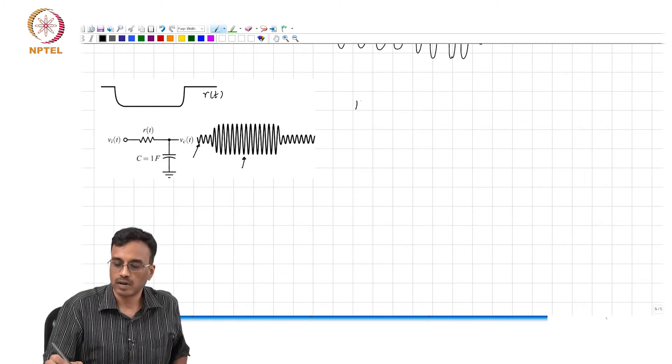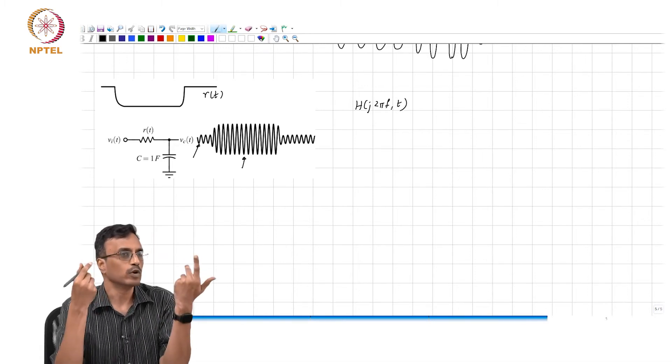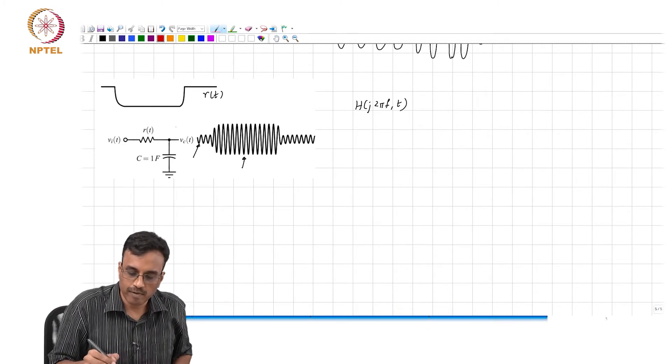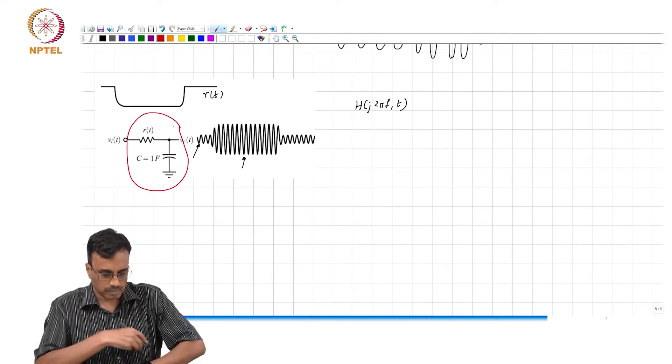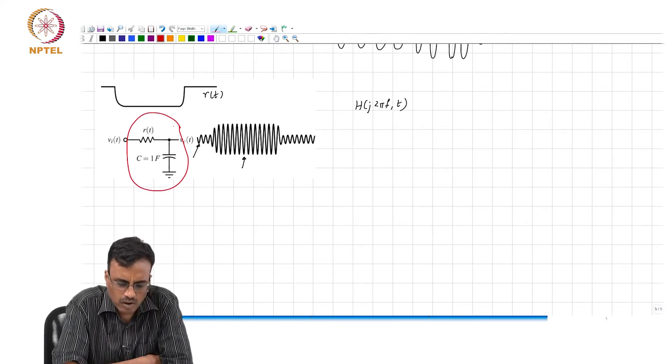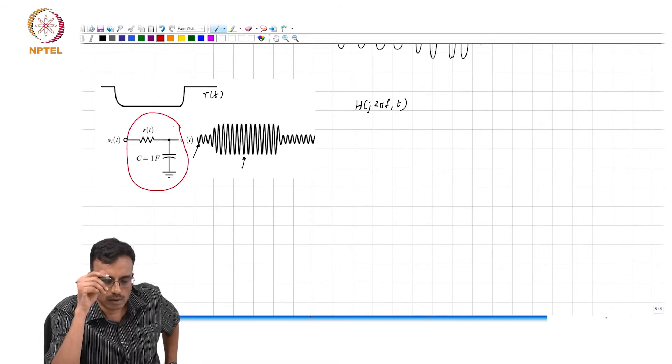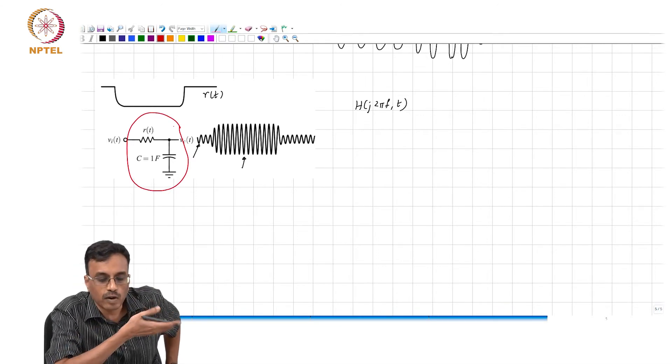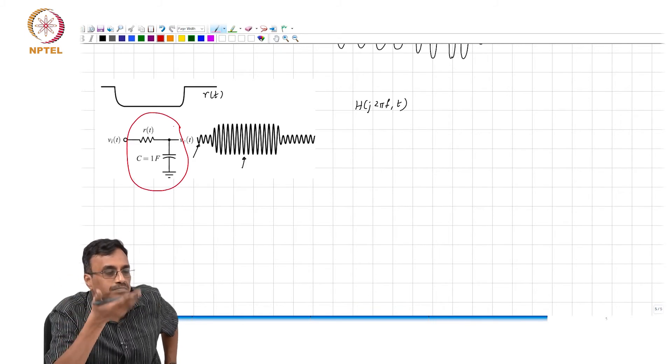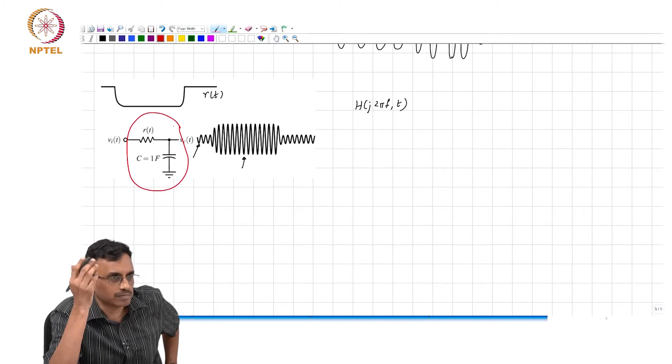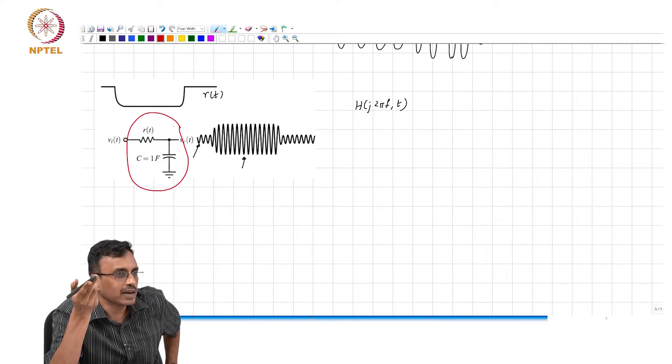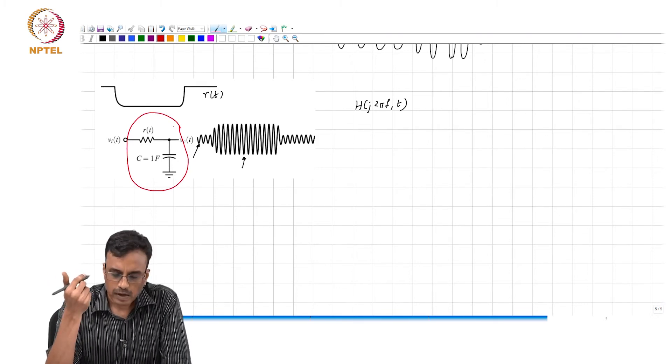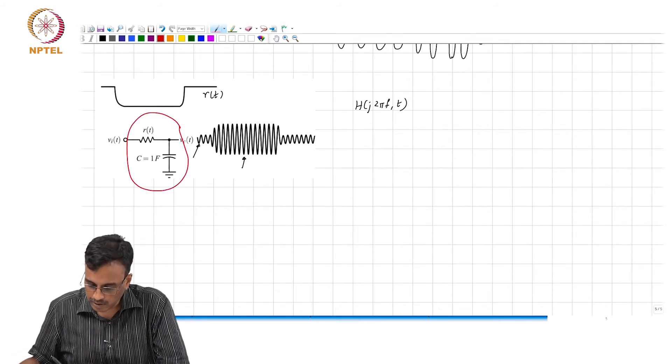Therefore, find h of j 2 pi f comma t - what should we do? If I wanted to plot the actual gain and phase experienced by this, if I wanted to find the gain and phase of this time varying system what should we do? What we just discussed right now. Basically we excited with cos and sine and use the formulae we derived, namely the real part is w_i times cos plus w_q times sin and the imaginary part is w_q times cos minus w_i times sin. And so I went ahead and did that.